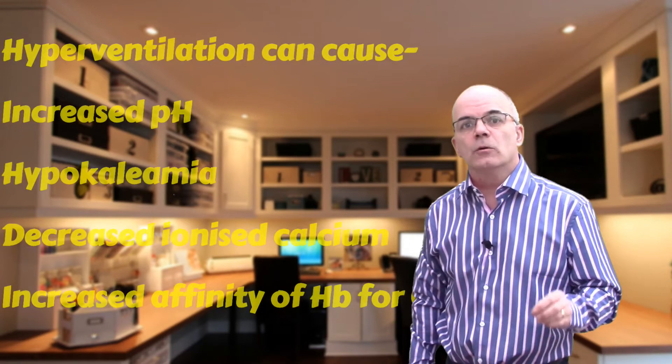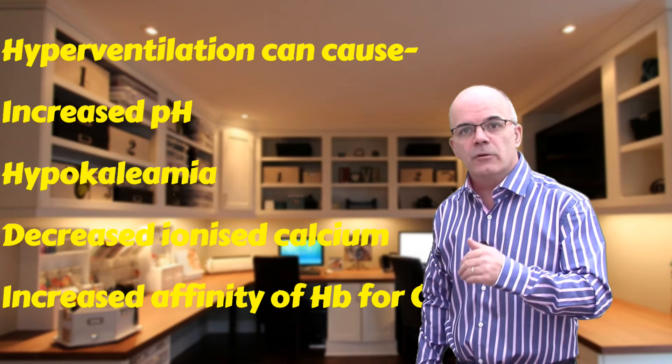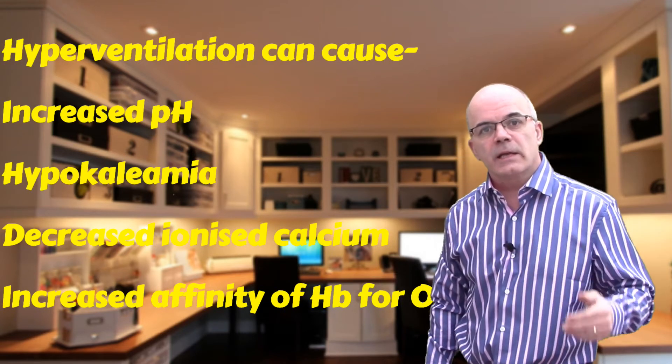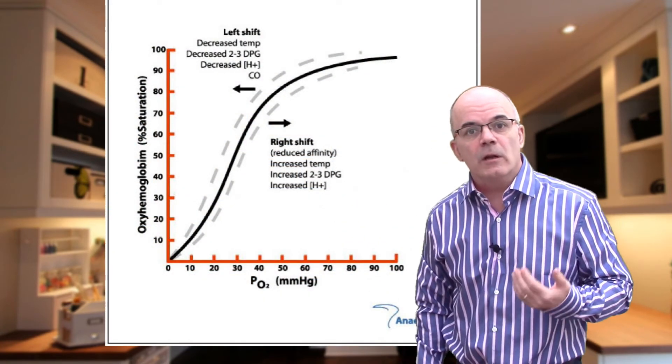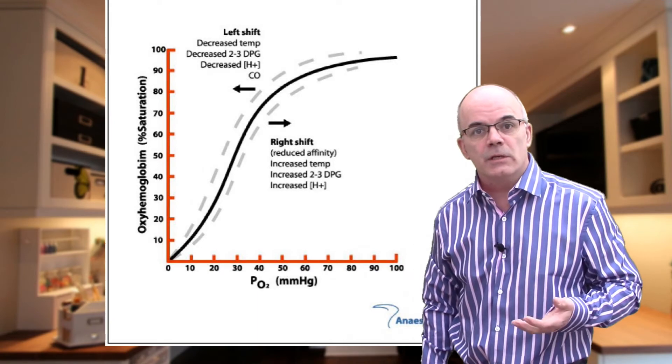Hyperventilation will lower the PaCO2, which increases arterial pH. This alkalosis can cause hyperkalemia, decreased ionized calcium, and increased affinity of hemoglobin for oxygen — in other words, a left shift of the oxyhemoglobin dissociation curve.